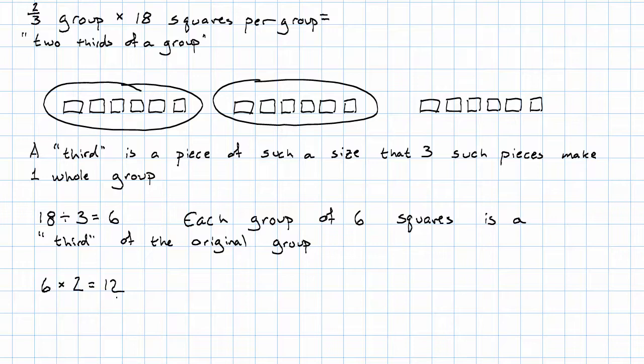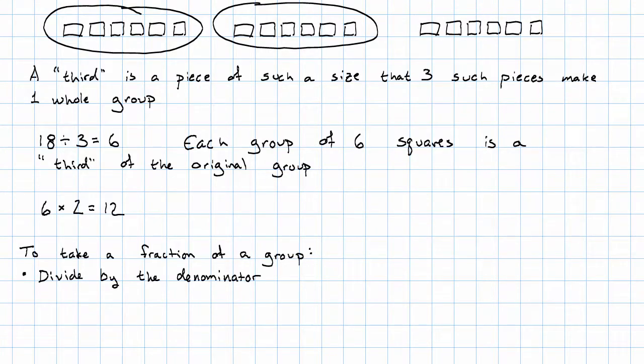To take a fraction of a group then, what do we do? Well, first we figure out what a third is in this case. We figure out what the relevant fraction is. To do that, we use division. First we divide by the denominator. And then, having done that, we multiply by the numerator.